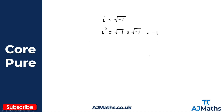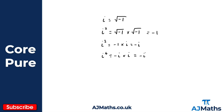So i squared is equal to minus one. Now let's consider i cubed. i cubed is i squared times i, and since i squared is minus one, i cubed is minus one times i, giving us minus i. Continuing up in powers: i to the four is i cubed times i, so minus i times i gives us minus i squared, and since i squared is minus one, that's minus minus one, giving us positive one.